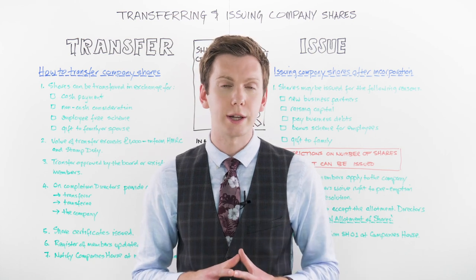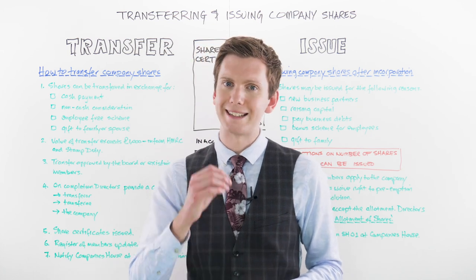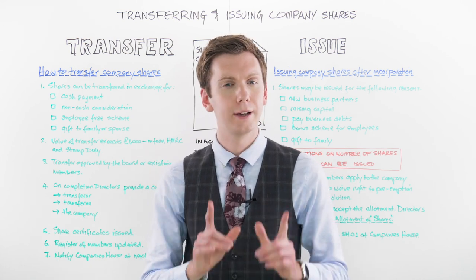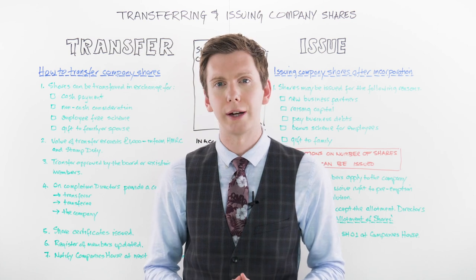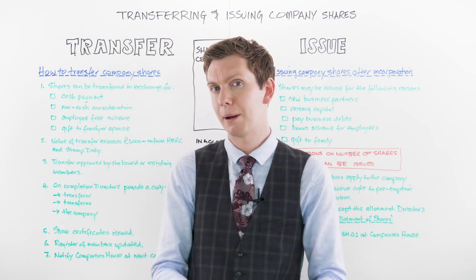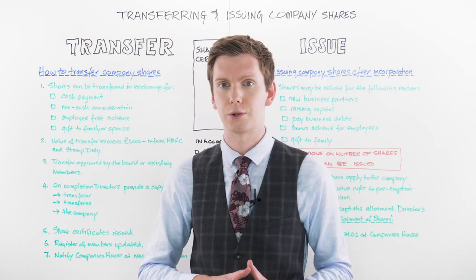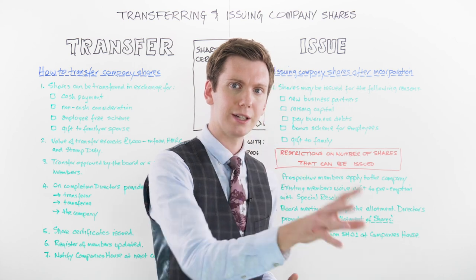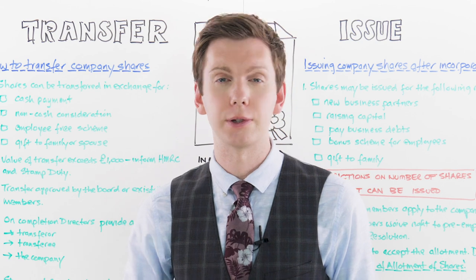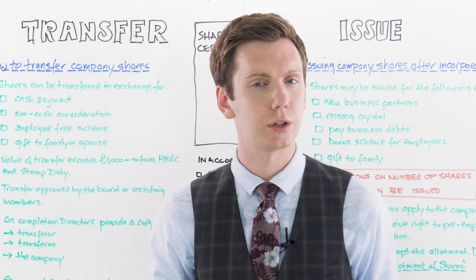Next, let's address the preemption rights of existing company shareholders. Preemption rights are provisions that give existing members the first refusal on any new or existing company shares that become available. The Companies Act provides default preemption rights on the allotment of shares, which can be removed from the articles or waived for individual transactions by passing a special resolution. While there are no automatic statutory provisions for preemption rights on the transfer of shares, companies can include that optionally within their articles. Preemption rights also protect members from unfair dilution and enable them to maintain their proportion and control over a company.